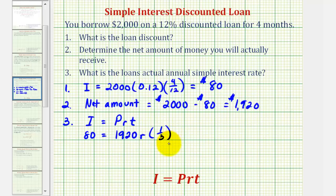And now if we solve this for R, we'll determine the actual annual simple interest rate that's being paid. Well, 1,920 times one-third is equal to 640, so we have 80 equals 640R. Divide both sides by 640.